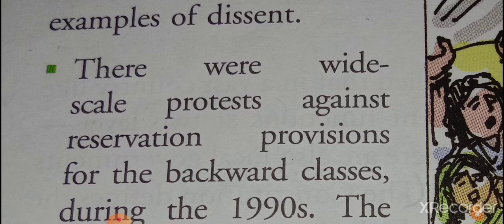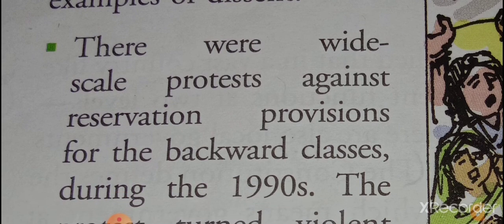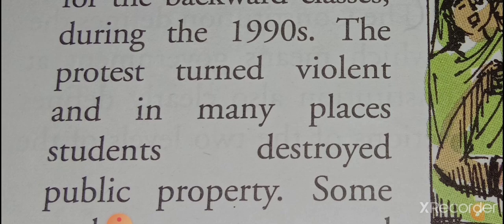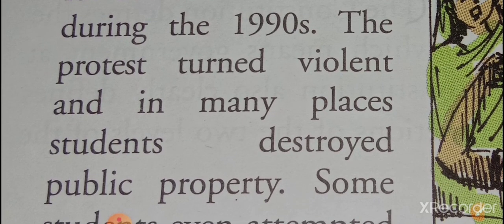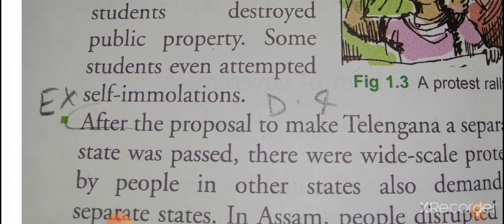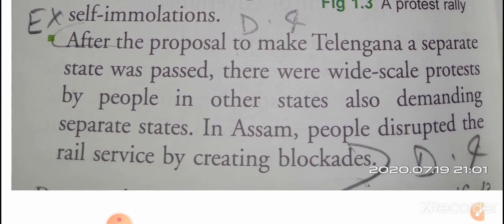There were wide-scale protests against reservation provisions for the backward classes during the 1990s. The protests turned violent and in many places students destroyed public property, and some students even attempted self-immolation. After the proposal to make Telangana a separate state was passed, people in other states also began demanding separate states, and some people disrupted rail services by creating blockades.